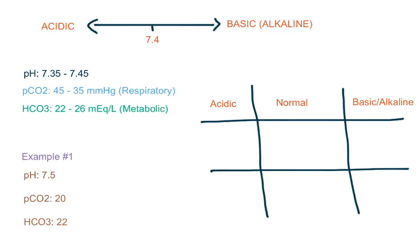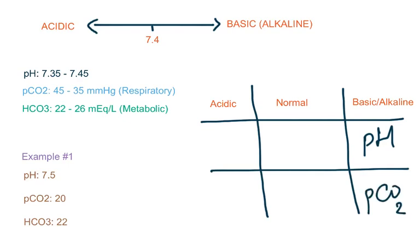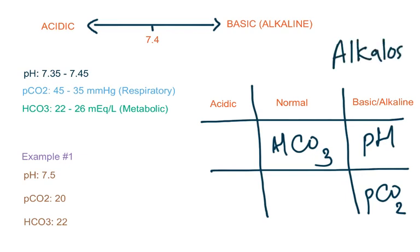Now look at this example. pH is 7.5, which means it is more than 7.45, so it will be on the alkaline side. Then we look at pCO2: it is 20, which is less than 35, so it's also on the alkaline side. Bicarb is 22, which is the normal range. So pH determines that this is alkalosis and the level of carbon dioxide determines that it is respiratory alkalosis.